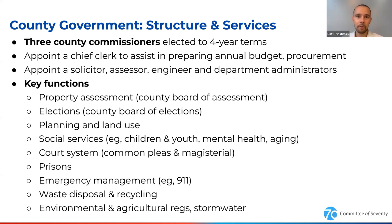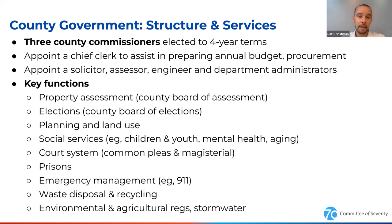Almost all of our 67 counties — not every single one — are overseen by three county commissioners elected to four-year terms, all concurrently. This 2023 election cycle happens to be one of those years in which we are electing county commissioners. They have broad powers. You don't see a mayor listed here, but the county commissioners have both an executive function and they'll hire and appoint a number of key officials and administrators to run and oversee county government. But then they'll also have a quasi-judicial function over certain things and even a quasi-legislative function in passing local ordinances.